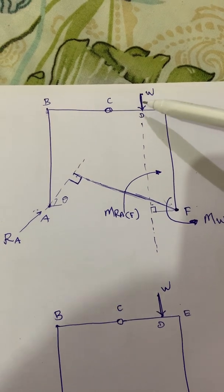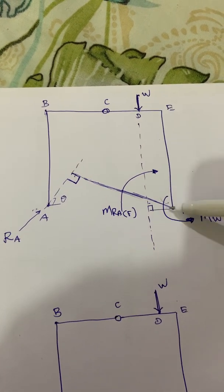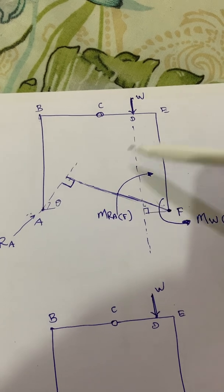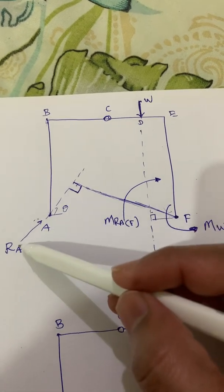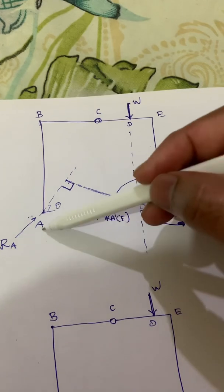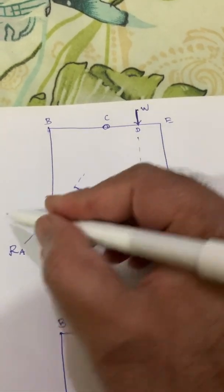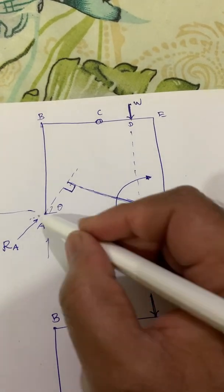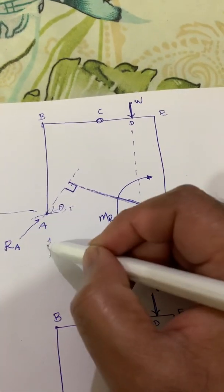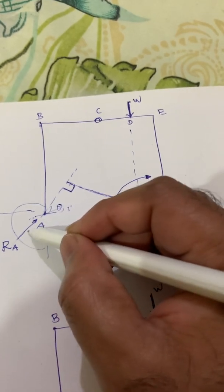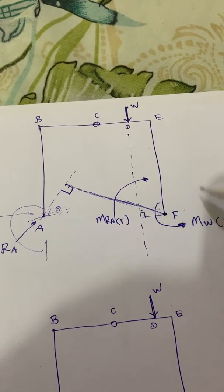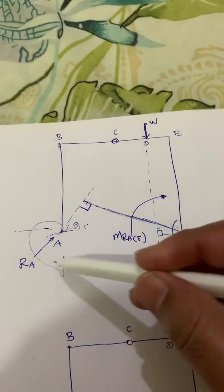Taking moments about F: the force W and its perpendicular distance will create an anti-clockwise moment. To resist or balance that anti-clockwise moment, there should be a clockwise moment. The reaction Ra can be in various directions — it should be at least at some angle to produce a perpendicular distance. Let us assume it is acting at some angle. This clockwise moment will balance the anti-clockwise moment caused by load W. Let us now find this angle theta.